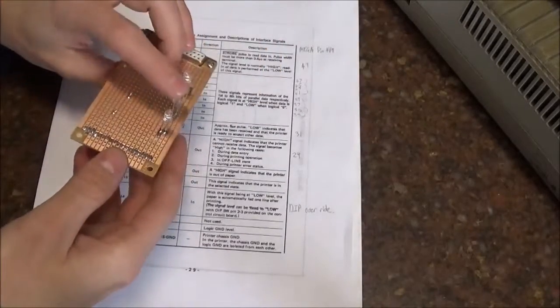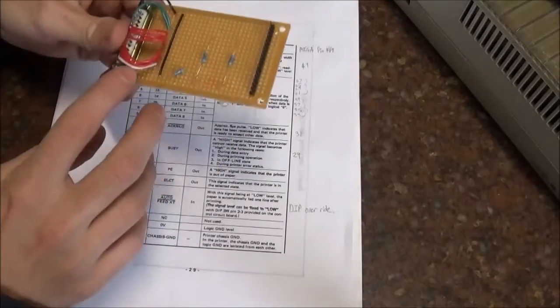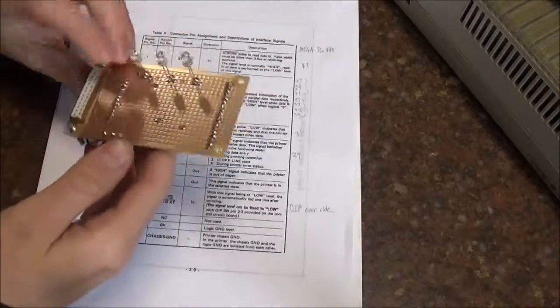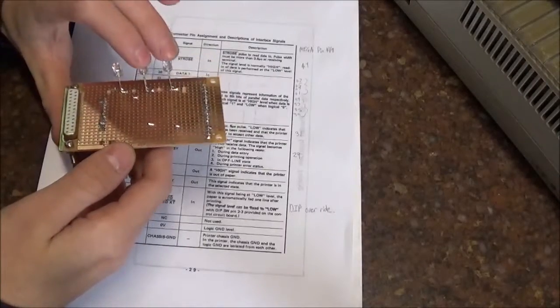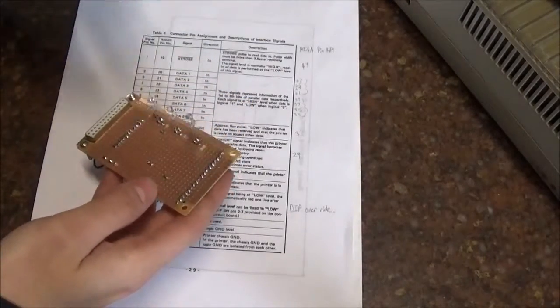I also added these three LEDs. So the first LED, this one, shows us what the strobe line is doing, and then these two are acknowledge and busy. Those will just give a nice visual representation that the controller is working.